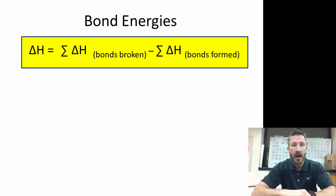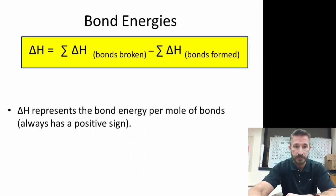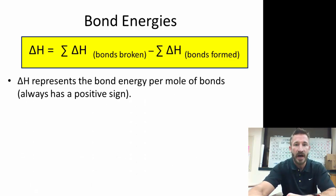This is a formula we're going to use. Bond energy. Delta H is equal to the summation of all the bonds that are broken—and those are going to be reactants—minus the summation of all the bonds that are formed, and those are products. The delta H represents a bond energy per moles of bond. It's always a positive sign.